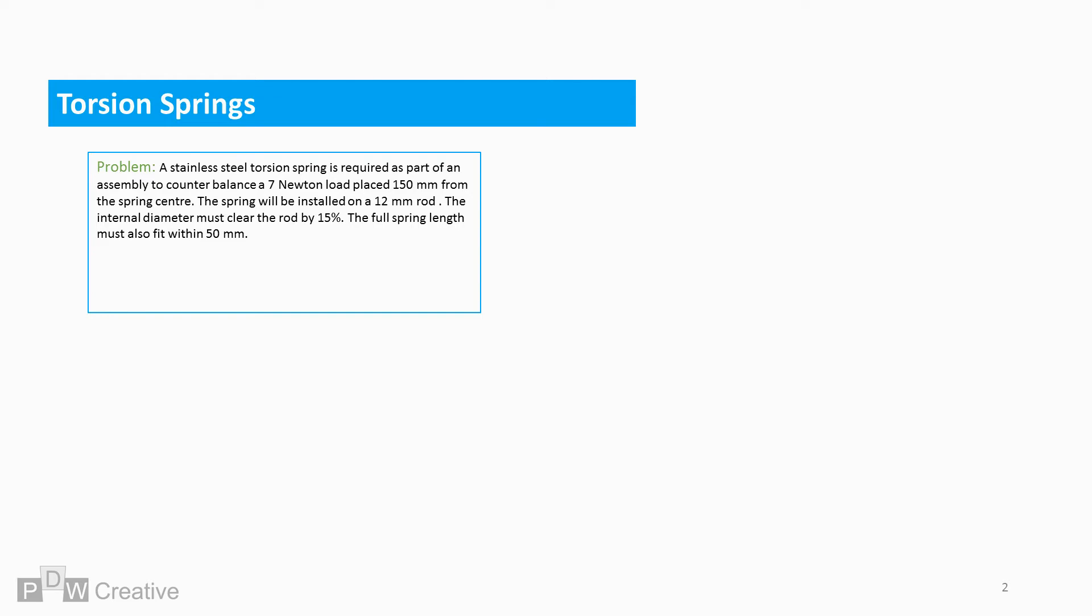Here is an outline of a torsion spring problem. A stainless steel torsion spring is required as part of an assembly to counterbalance a 7N load placed 150mm from the spring's centre or pivot.